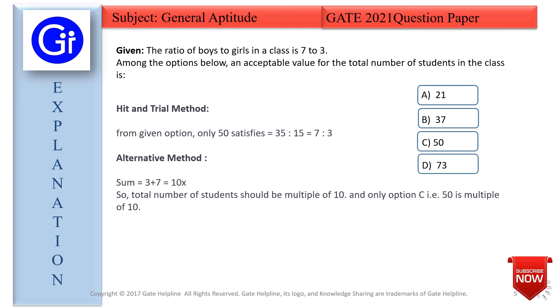Among the options, only option C (50) is a multiple of 10. 10 × 5 = 50. From this method also, we get option C.